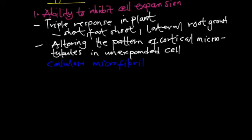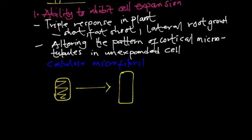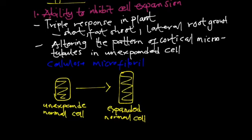If we have a cell, an unexpanded cell, for it to expand normally it's going to give rise to a cell with microfibers arranged normally. At the end of the day you have this normal cell which will be expanded with straight chains of polysaccharides arranged perfectly inside them. But when you have a cell that has been affected with C2H4 combining with the cell,